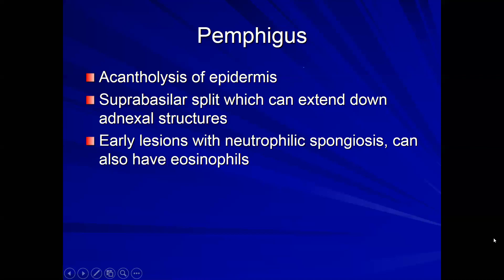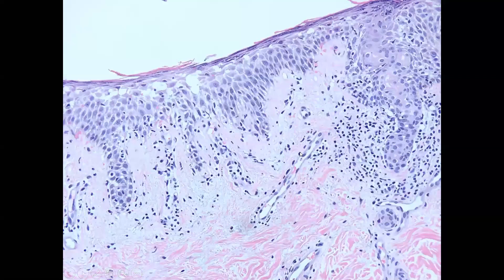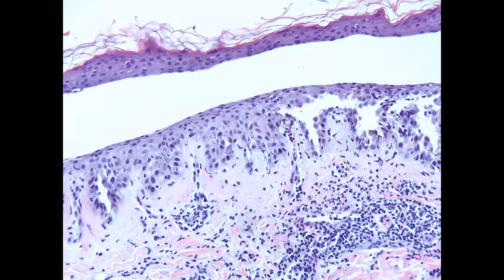Here's a picture of early pemphigus. Before it splits, it looks like spongiosis because cells just have increased space between the desmosomes, and you can have neutrophils in the infiltrate. Here you have a more obvious suprabasilar split, right above the basal layer. The neutrophils in the different sections show that early autoimmune blistering disorder can bring those cells.